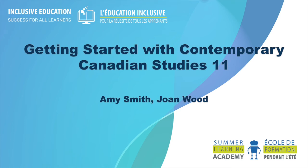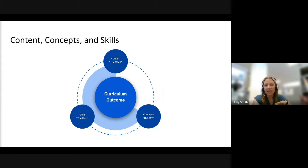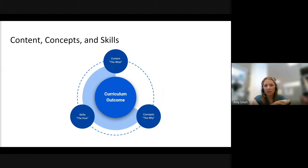One thing you might find helpful in helping your students plan is that the at-a-glance documents really lay out the relationship between content, concepts, and skills. Those are the three big building blocks of the curriculum design and are reflected in our outcome statements. An outcome tells us what students are expected to know, understand, and be able to do, and the at-a-glance helps us see how content, concepts, and skills come together in what we ask students to explore.